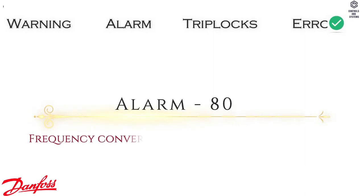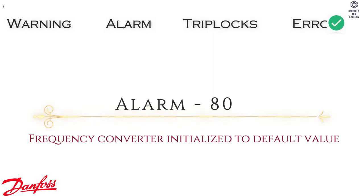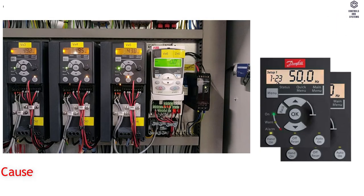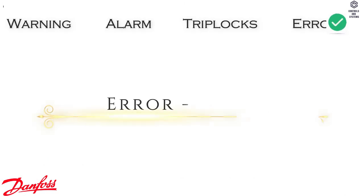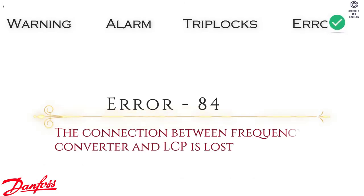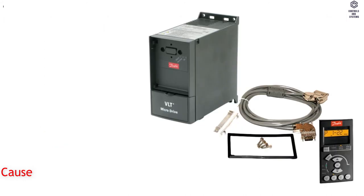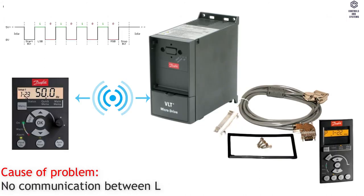Alarm 80: Frequency Converter Initialized to Default Value. Cause of Problem — all parameter settings are initialized to default settings. Error 84: The connection between frequency converter and LCP is lost. Cause of Problem — no communication between LCP and frequency converter.